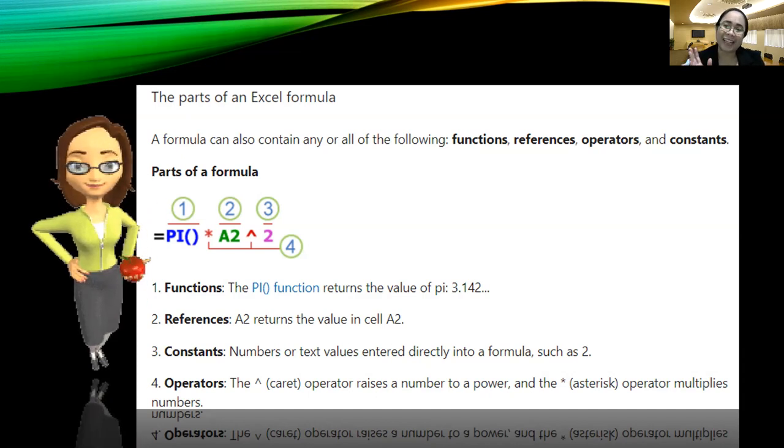While the asterisk and the caret are both operators in Microsoft Excel. The asterisk is used for multiplication, while the caret is used for exponentiation. A2 is a reference. It points to column A and row 2. While 2 is a constant value.